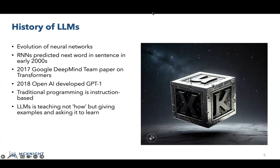In 2018, OpenAI picked up on that and developed GPT-1. Whereas traditional programming is instruction-based, LLMs teach by giving examples and asking the model to learn. Some critical points in this evolution include BERT, GPT-2, and GPT-3 in 2020 — a real critical inflection point. GPT-4 arrived in 2023 with 1.76 trillion parameters. A parameter is a variable that the model uses to make predictions or decisions. These models are doing nothing but getting better and bigger.